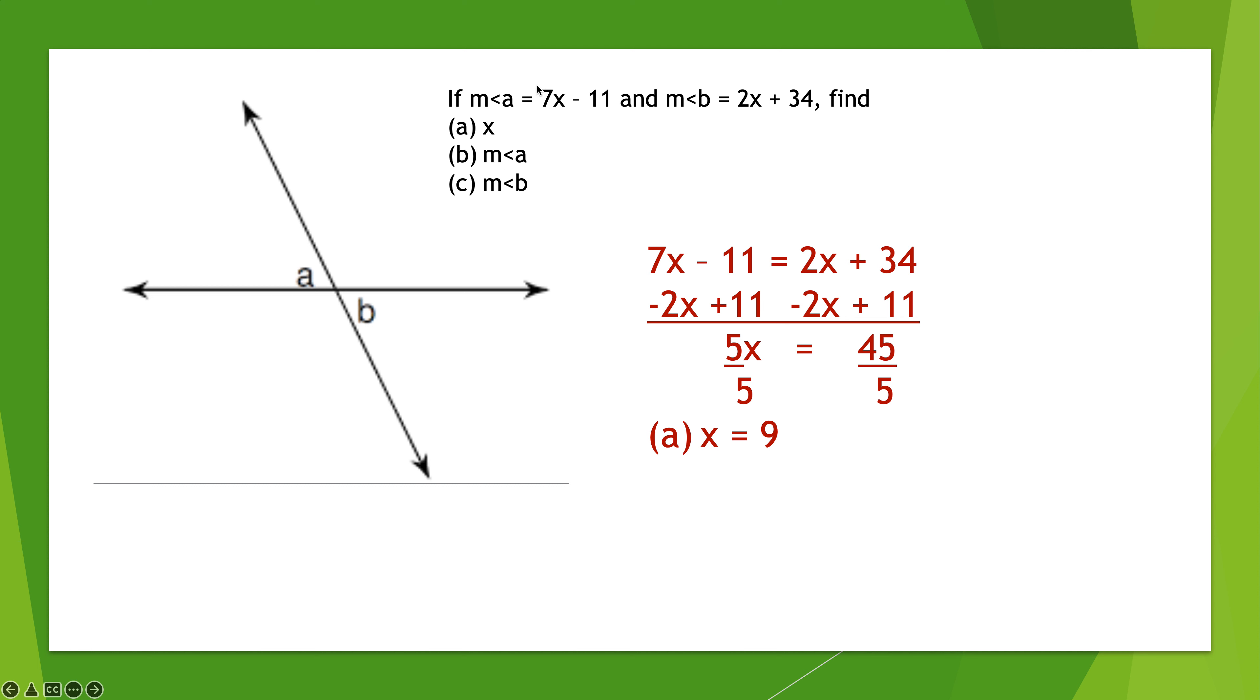Now, for the measure of angle A, it's going to be 7 times that 9, right? Because 7X means 7 times X, and then minus 11. So the measure of angle A is 7 times 9 minus 11, which is 52. And then the measure of angle B is going to be 2 times 9, which is 18, plus 34, which is also 52. And I find that uplifting that they're both 52 because they are vertical angles, and they are supposed to work out to be equal to each other.